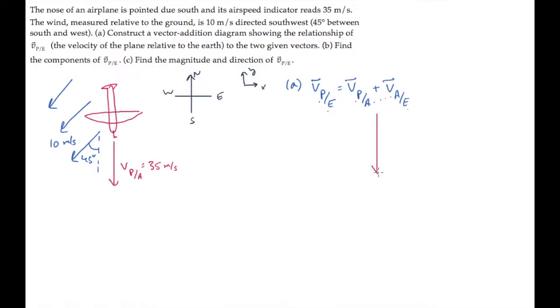The plane relative to the air is straight down, with a length of 35 meters per second. The velocity of the plane relative to the earth is at 45 degrees, with a length of 10. And I'll draw the velocity of the plane relative to the earth as the sum of these two in green. That's shown here.